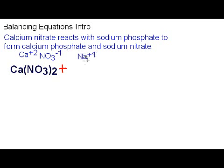Next is the sodium phosphate. Na has a plus one. Phosphate has a minus three. Put those together and we get Na3PO4.